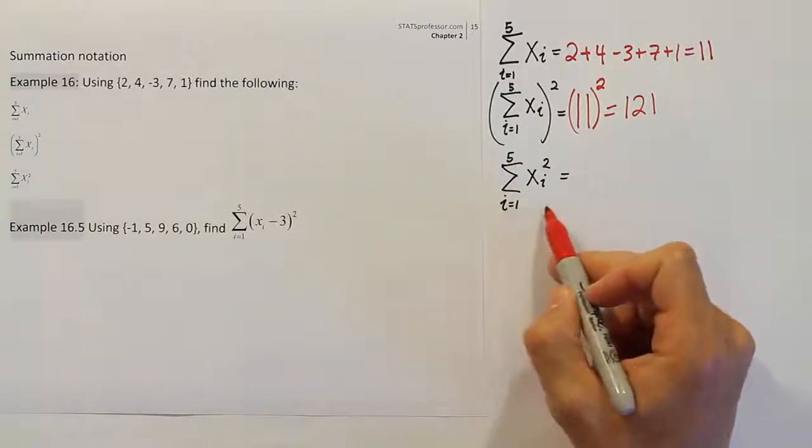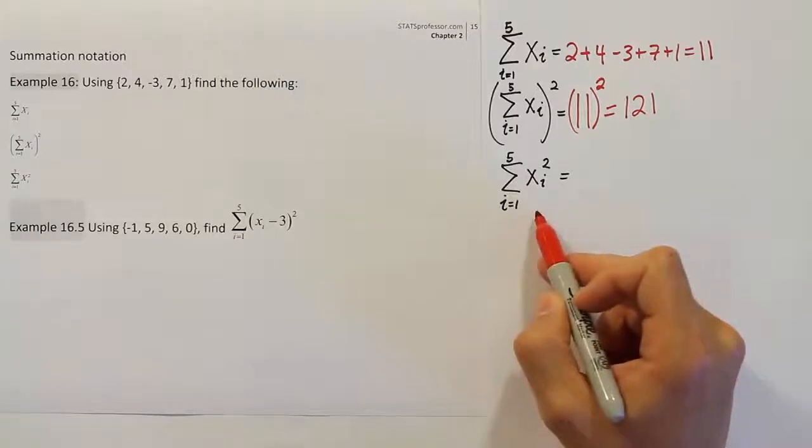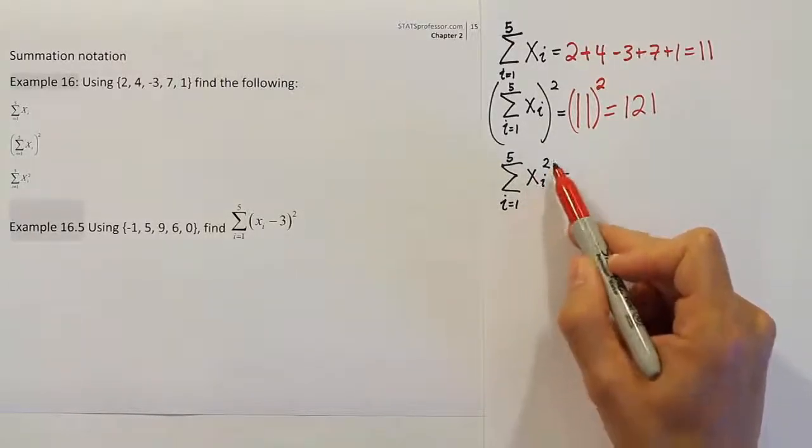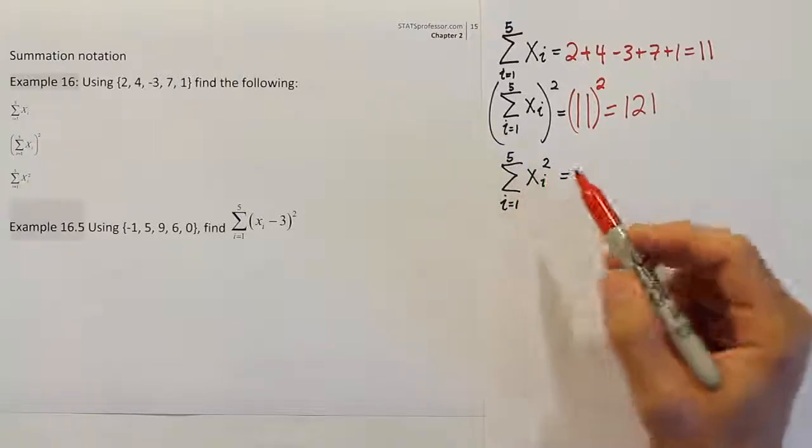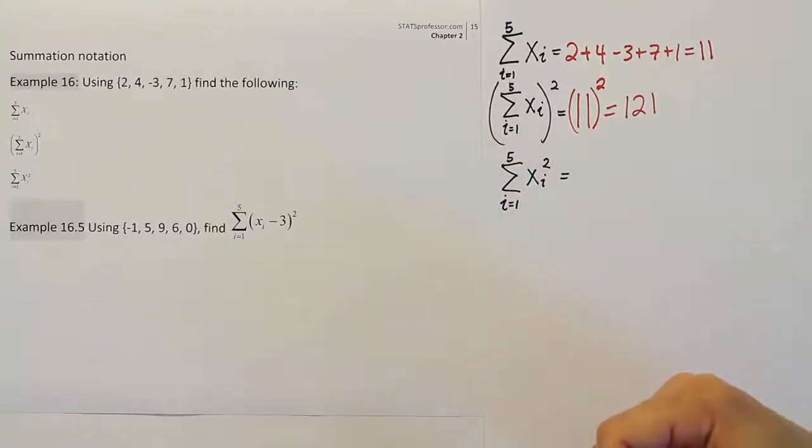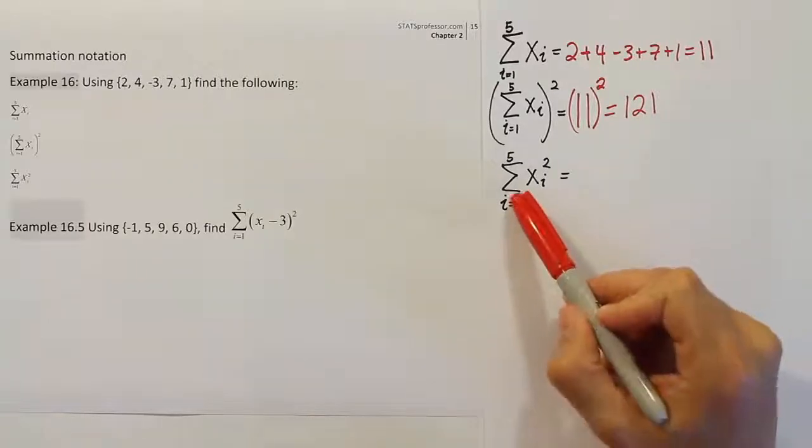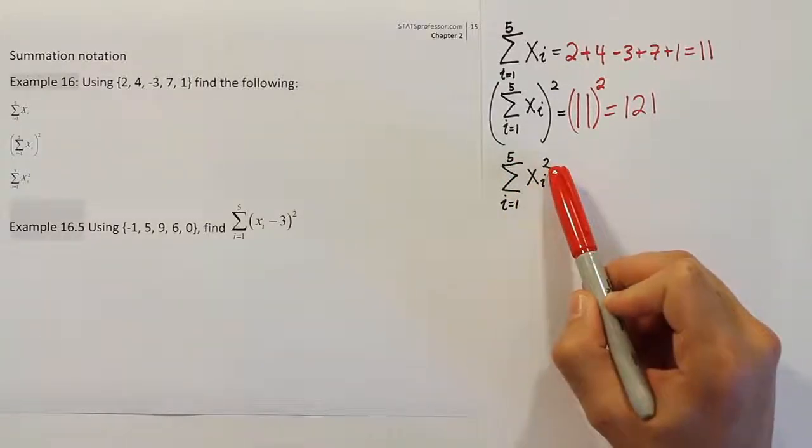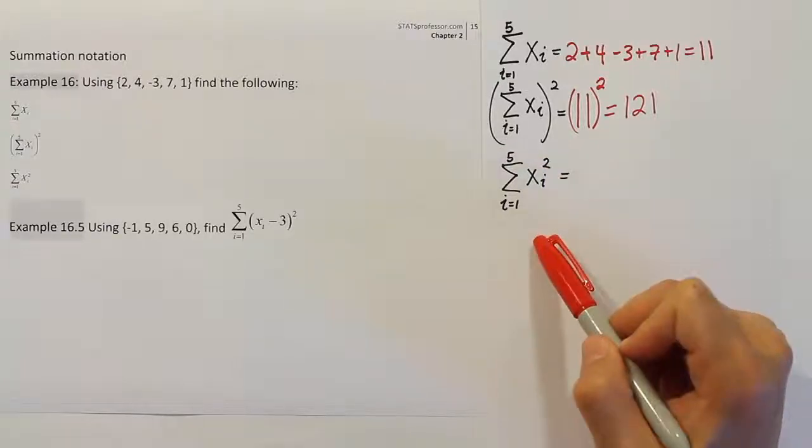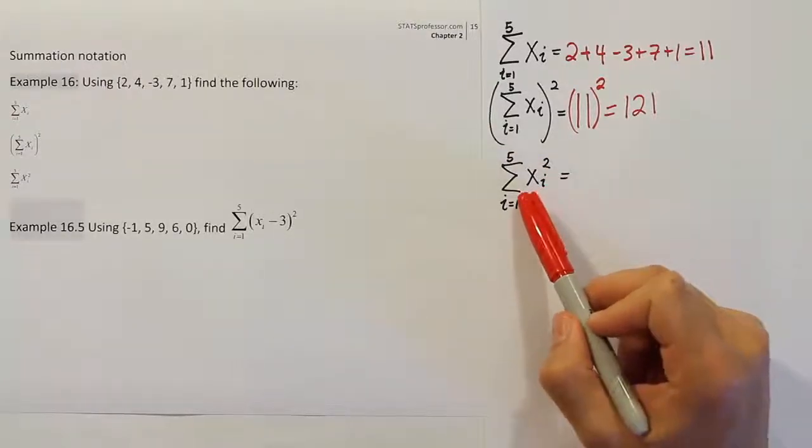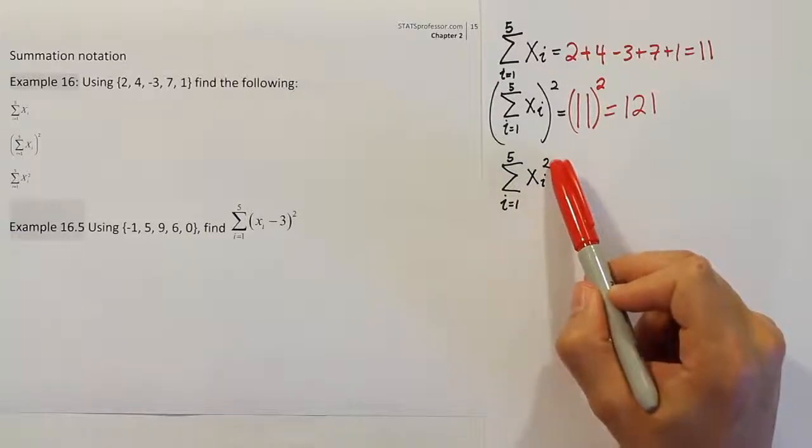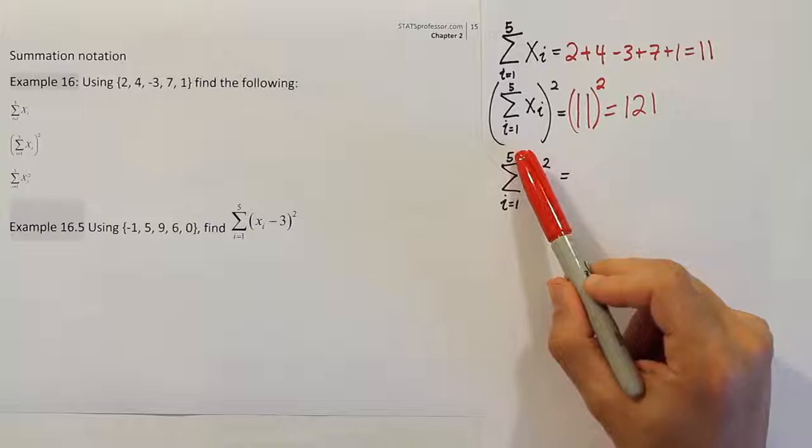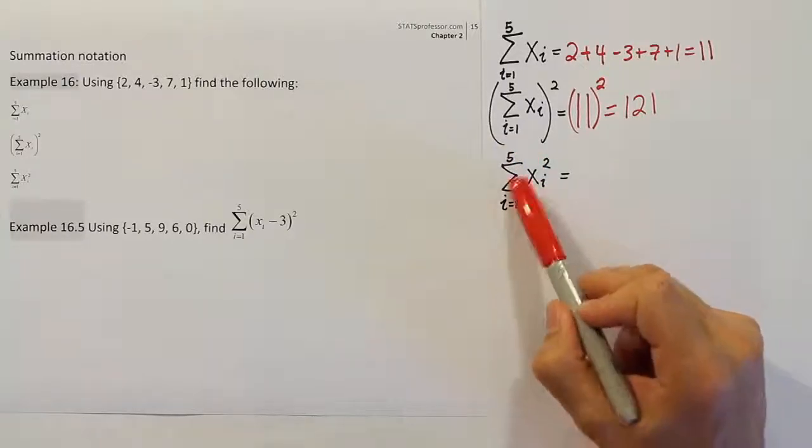Now let's look at this next summation notation. It says that we have xi squared, and they want us to add those up from the first to the fifth one. So if we think about order of operations, what goes first? Is it the addition that the summation symbol is indicating, or is it the squaring that goes first? Well, in order of operations, exponents happen before addition. So what this is saying, we have to actually square all the x values from the first value to the fifth value, and only after doing that do we add them all together.